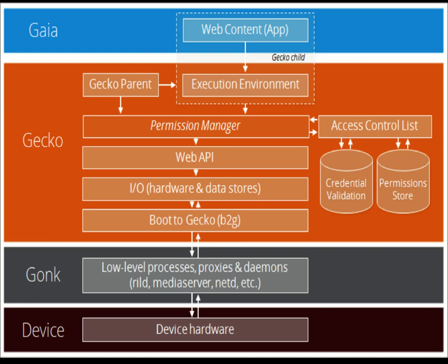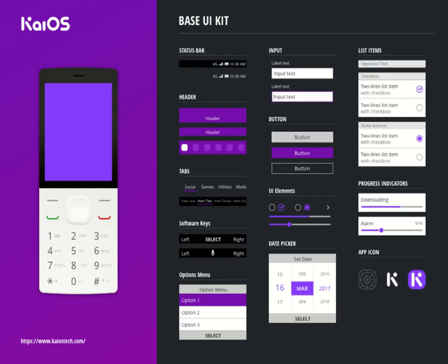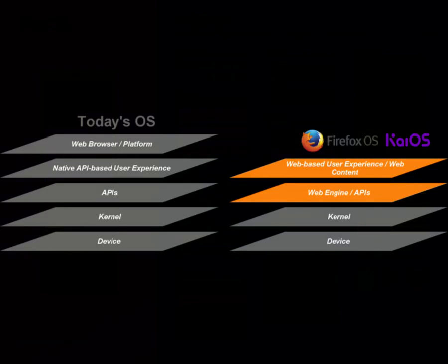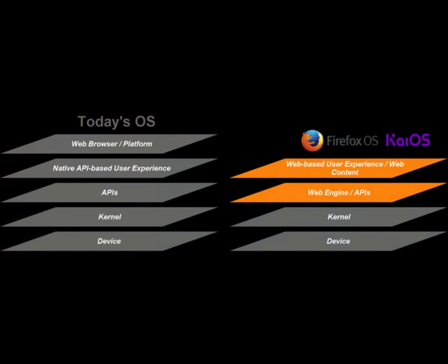KaiOS uses Gecko as a runtime to manage the startup processes up to the graphical interface, Gaia, consisting of a single application — a web browser — which produces JavaScript, HTML and CSS code to ensure that the operating system is also used on devices with 256 MB of RAM, starting applications as if they were just tabs in a browser.